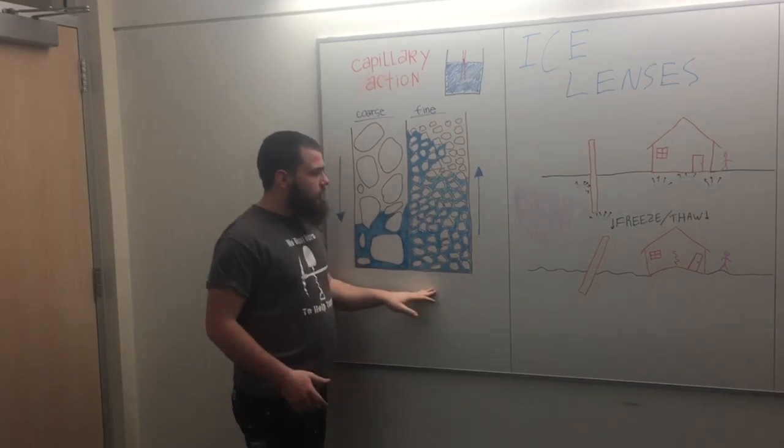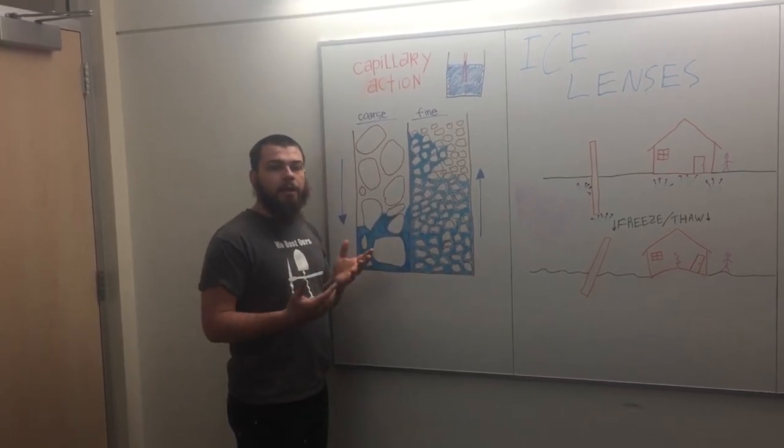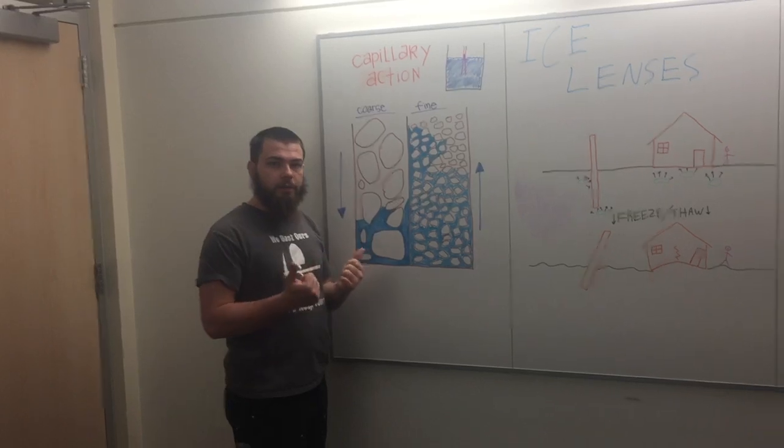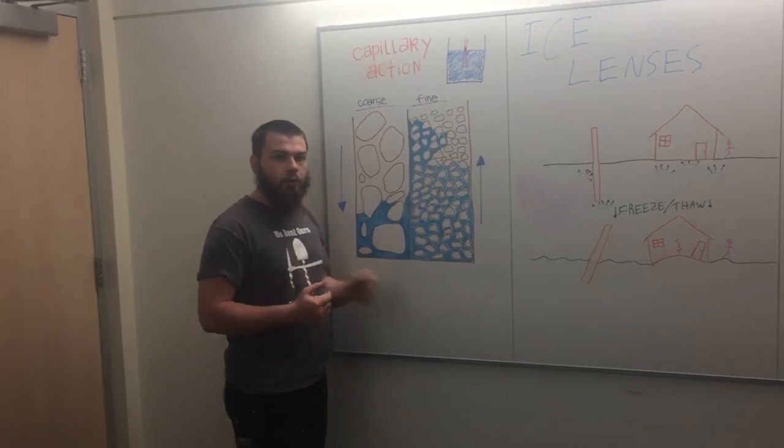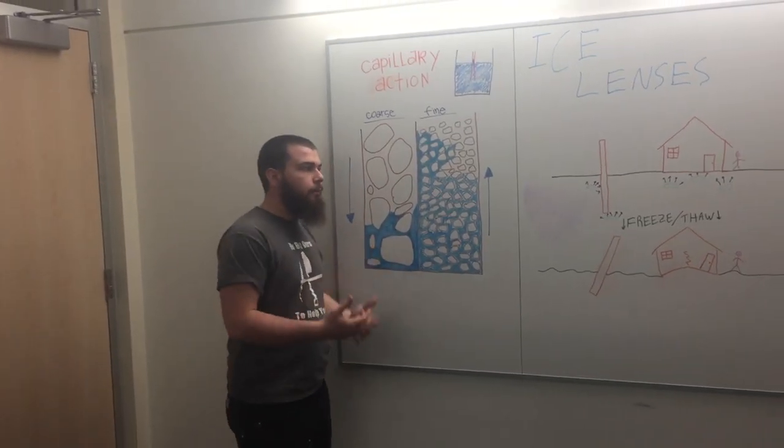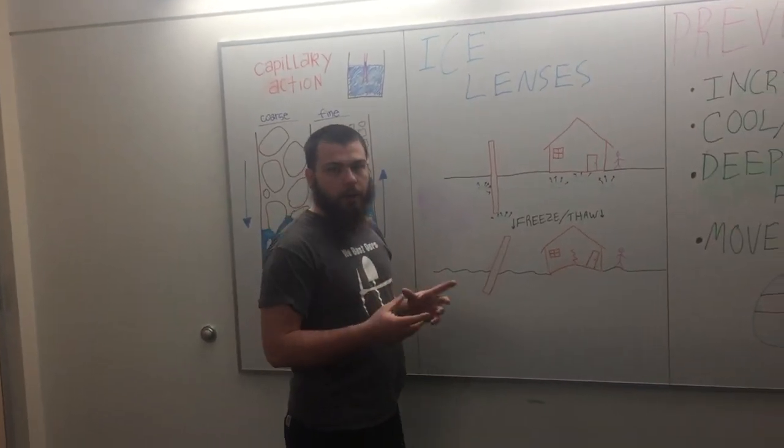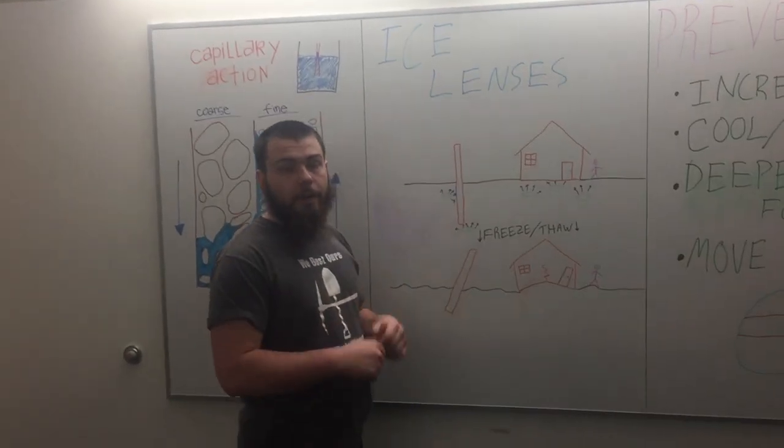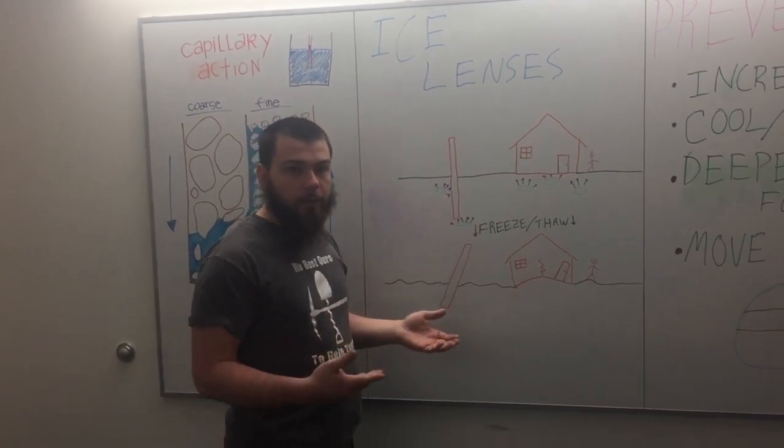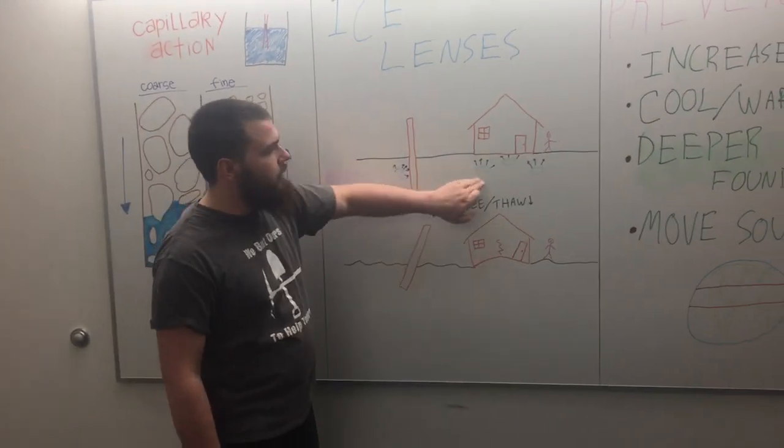In fine soil, these paths already exist, but as the water freezes it expands and constricts these paths even more, drawing more water up. As that water travels up, it connects with this ice ball and freezes to it, expanding the ice ball even further and compounding the problem. This leads to ice lenses.